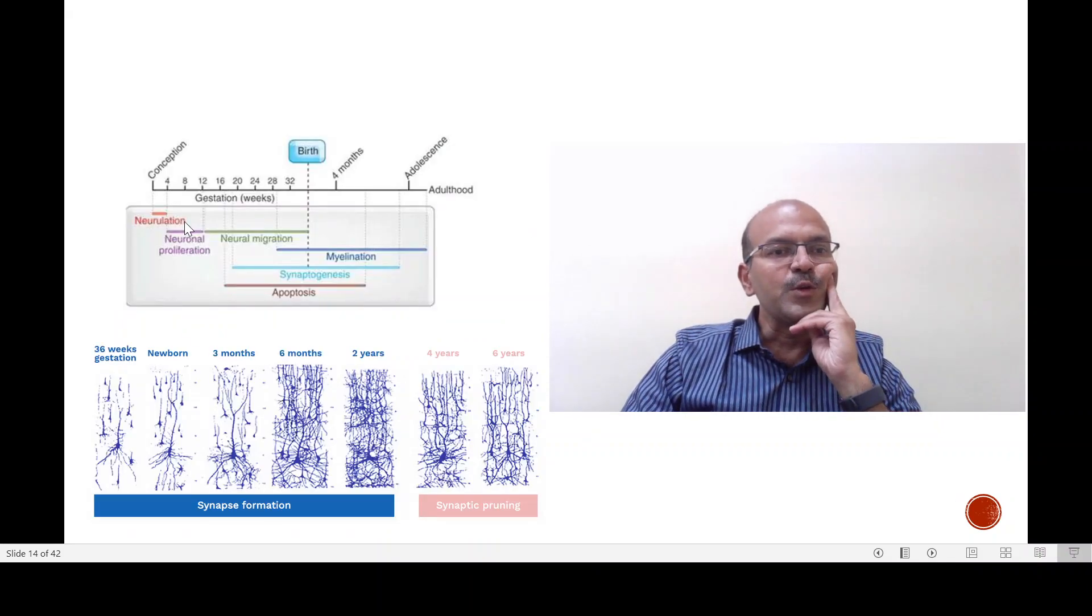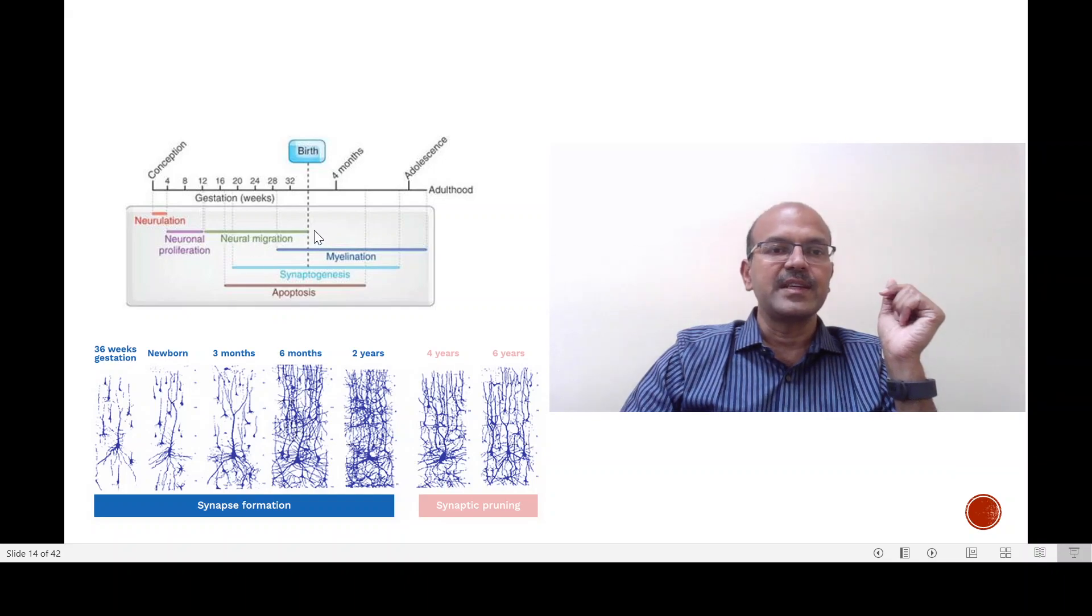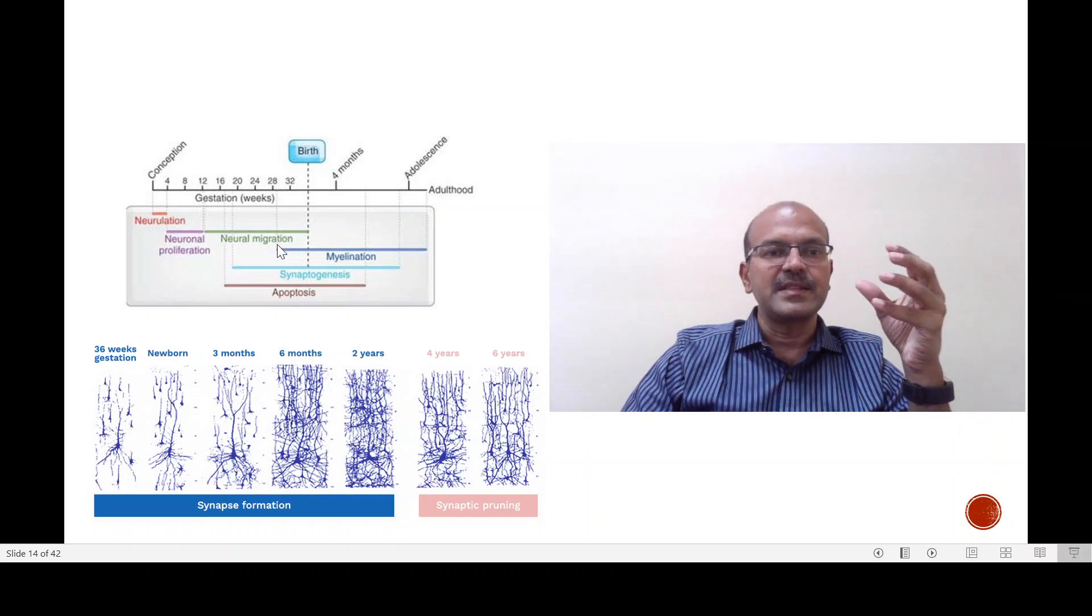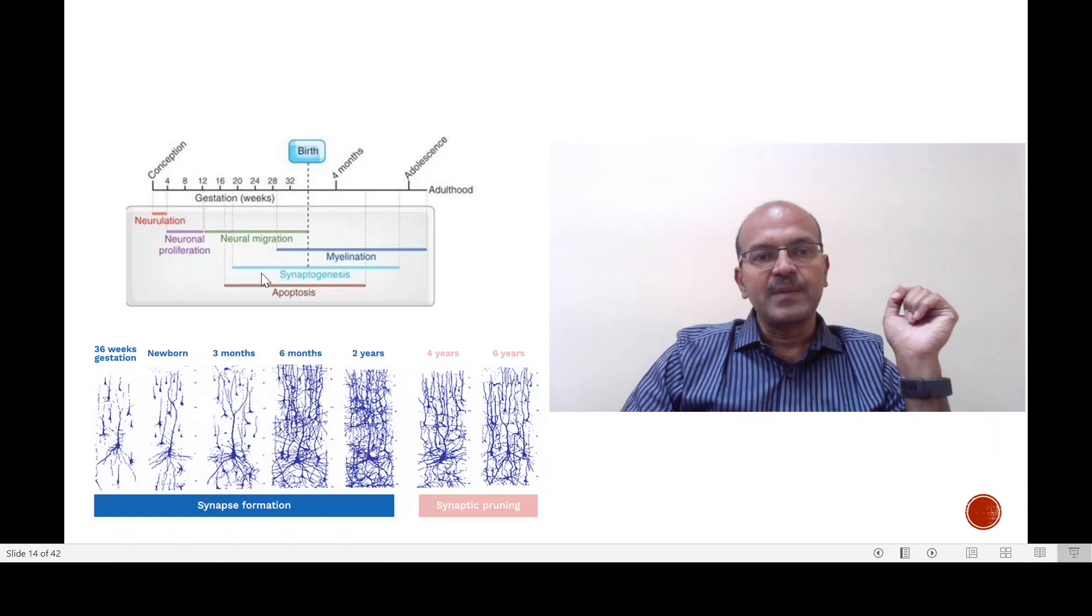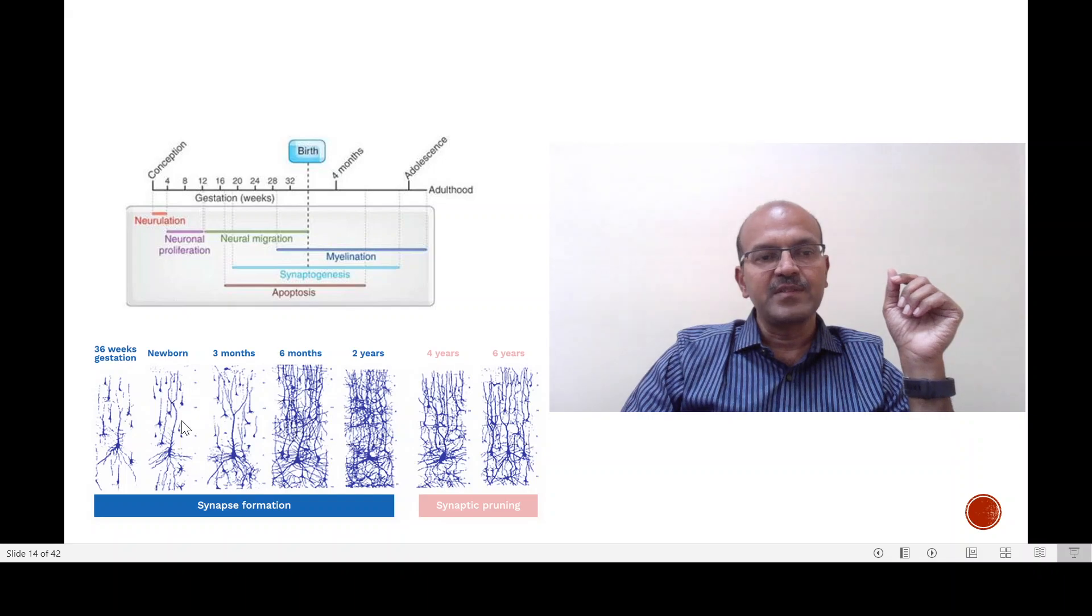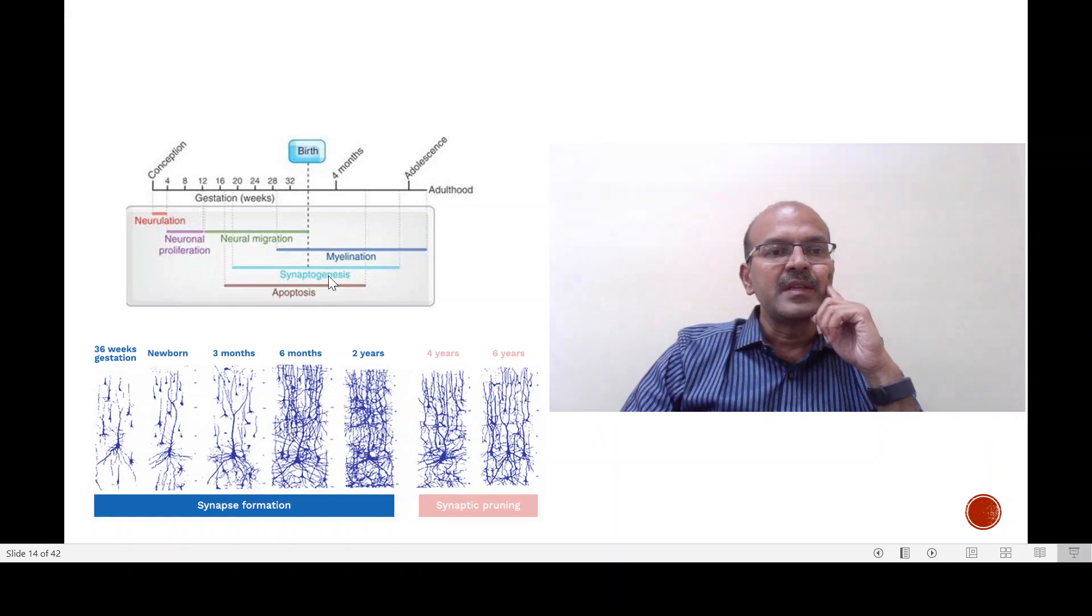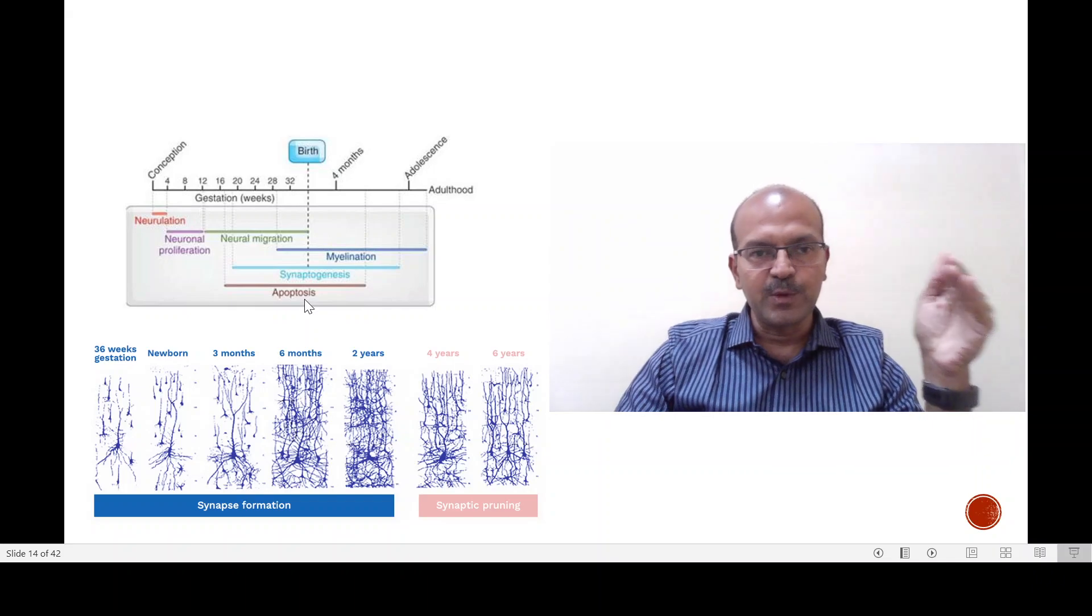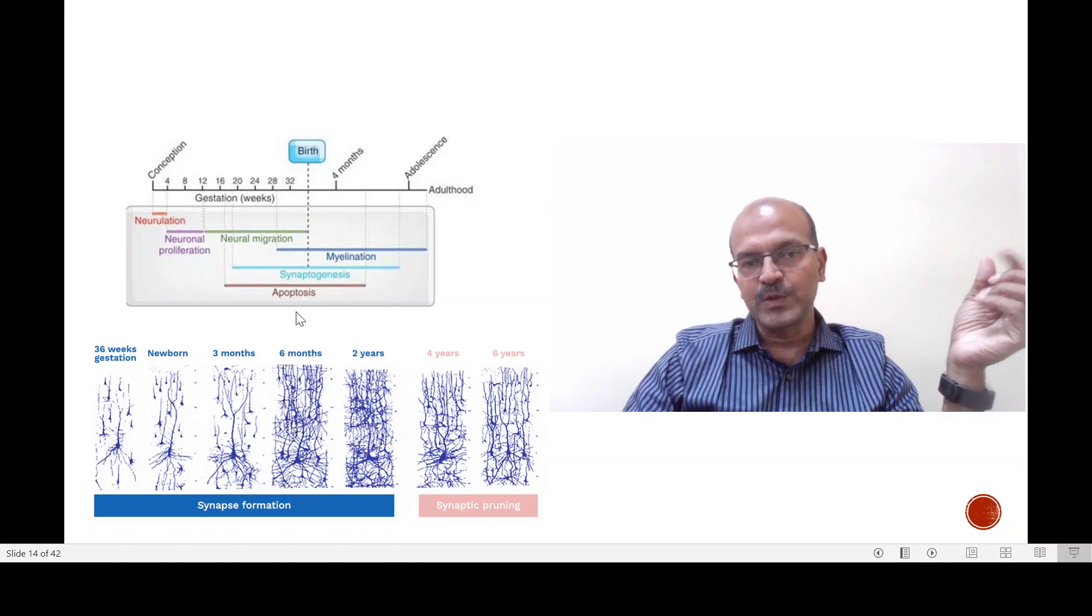We have the neuralation stage when the neural tube is formed and the proliferation stage when the cells are produced, then the migration stage continues right till birth. The maturation of whatever cells migrate and develop as synaptogenesis where the connections between the nerve cells are formed and these connections are called dendritic connections. Then there is apoptosis or programmed cell death. Some extra cells are produced and they are programmed to die soon while the ones which are supposed to survive have a certain age as part of the aging process.